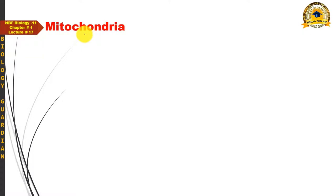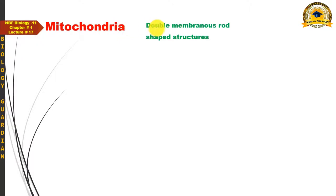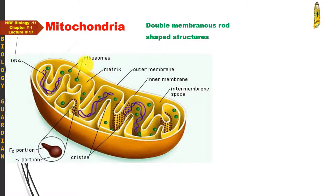Among the organelles discussed so far, some were single-membrane bounded and some were non-membranous — for example, ribosomes and the cytoskeleton are non-membranous. However, mitochondria, plastids, and nucleus are all double-membranous structures. So mitochondria are double-membranous, rod-shaped structures.